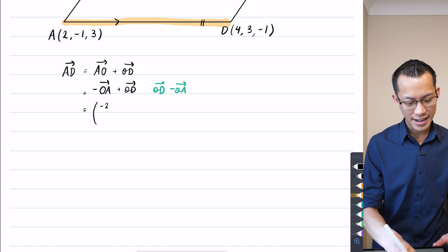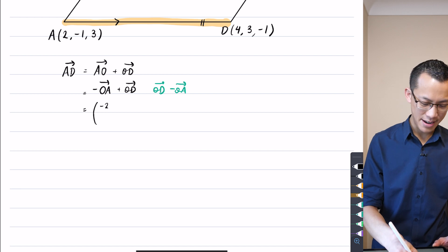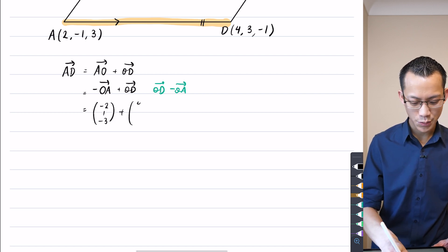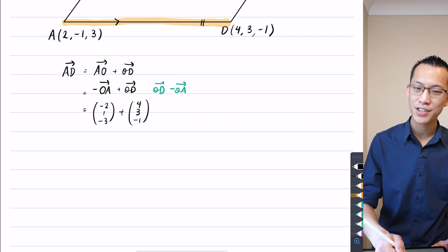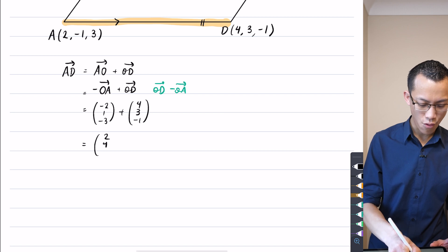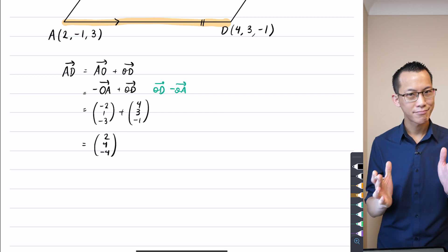Now that you know what that is, it's just a matter of crunching the numbers to find out what AD is. So negative OA is going to be negative 2, 1, negative 3. And we're adding that to OD, which we can just read off from the question. And that gives you, if I'm getting this right, 2, and then 4, and then negative 4. So far, so good.